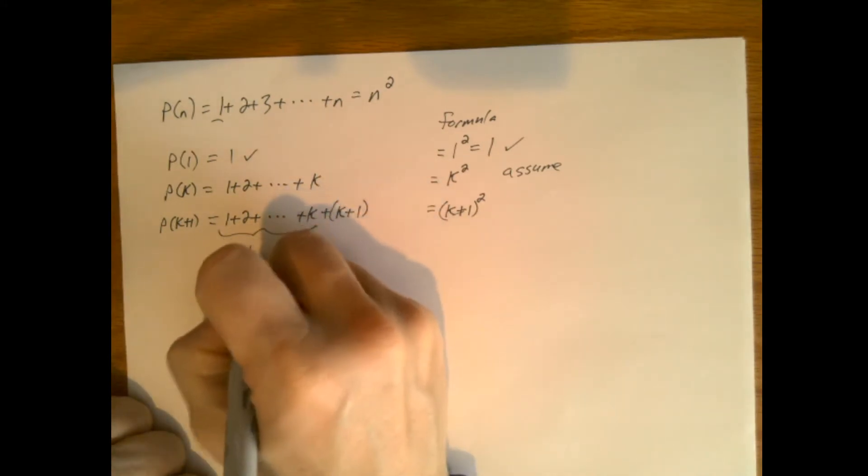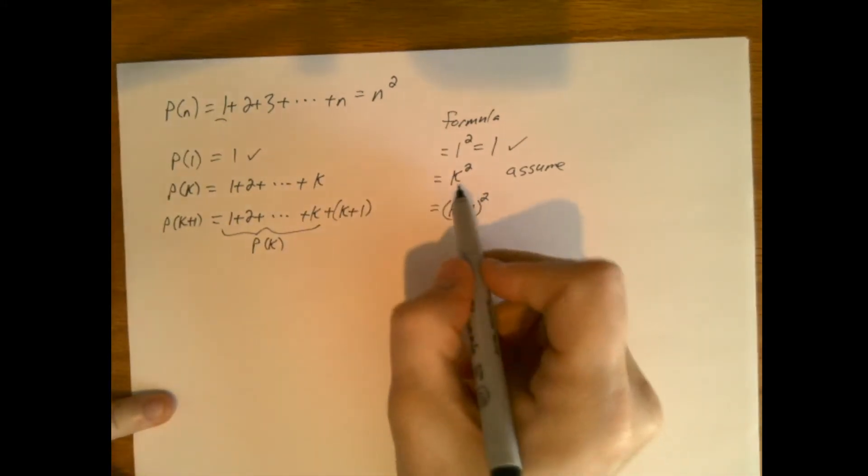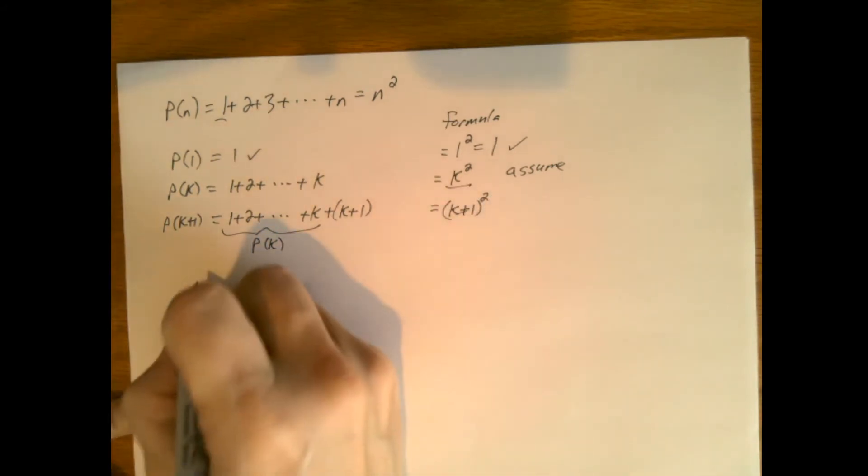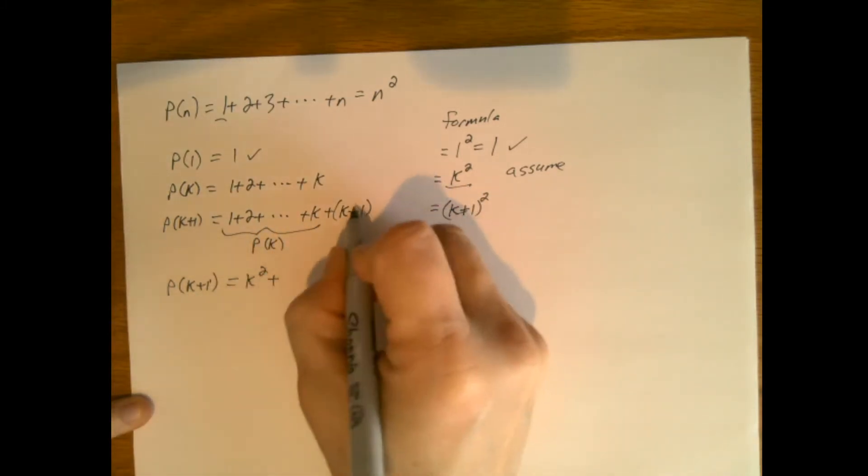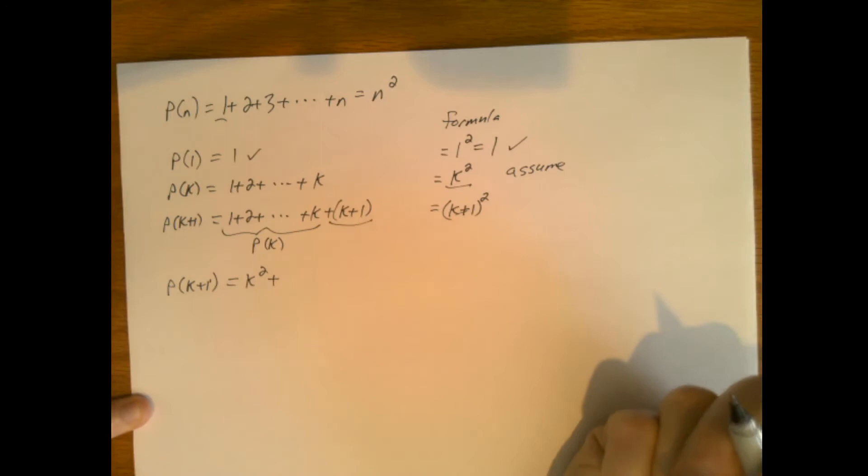This part right here is P(k). And so now we use the formula for P(k). So we get that P(k+1) is equal to k squared plus the extra, k plus 1.